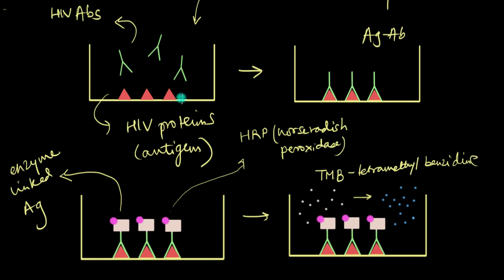On the other hand, what do you think would have happened if the person didn't have HIV? Well, in that case, if the person's blood sample didn't have these HIV antibodies, then nothing would bind to these HIV proteins inside the well, right? No antigen antibody interaction would take place. Even the enzyme linked antigens wouldn't have anything to bind to because there are no antibodies, right? Then what would happen?